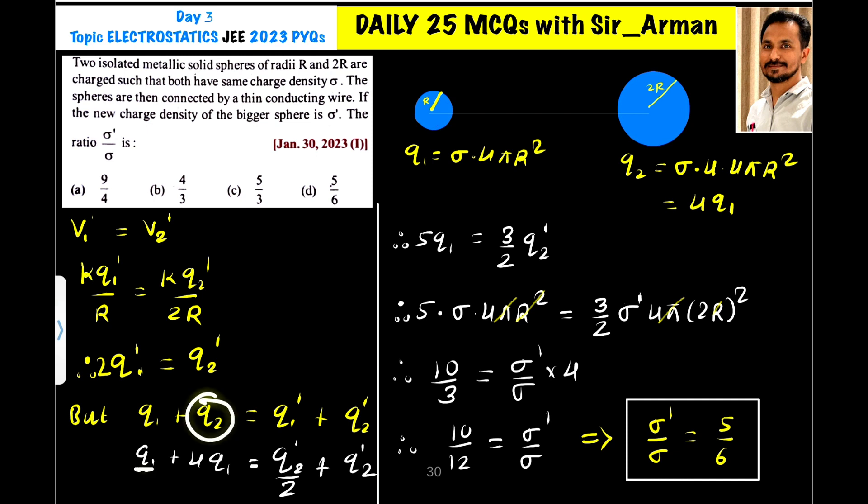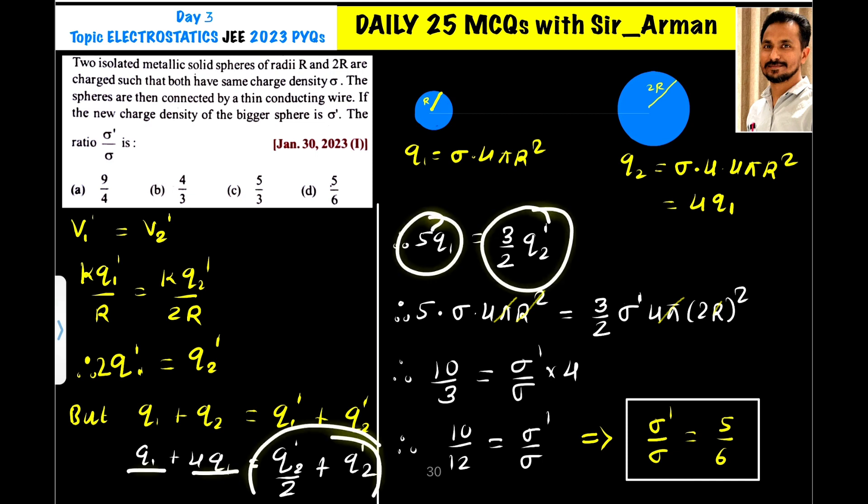Now q2 is 4q1, so 5q1 equals q1 dash plus q2 dash. If you make q1 dash as the subject, then it is q2 dash by 2. So q1 plus 4q1 is 5q1, and if you solve this you will get 3 by 2 q2 dash.